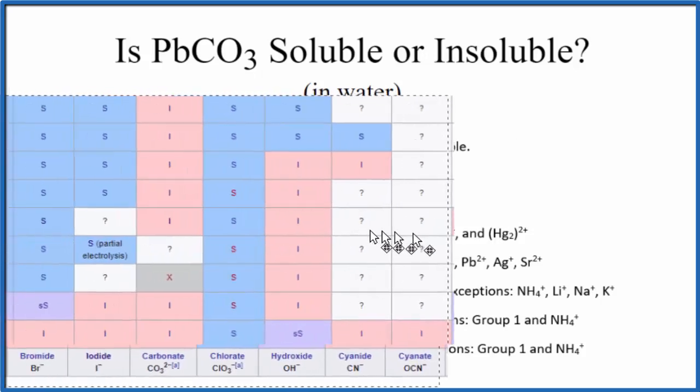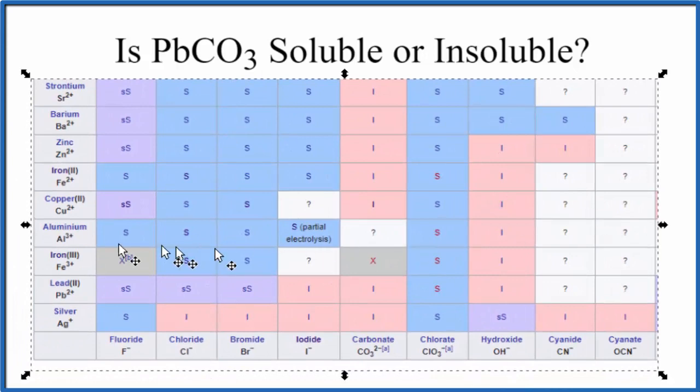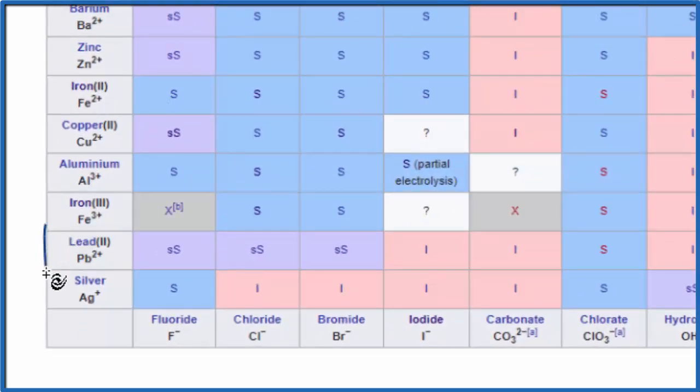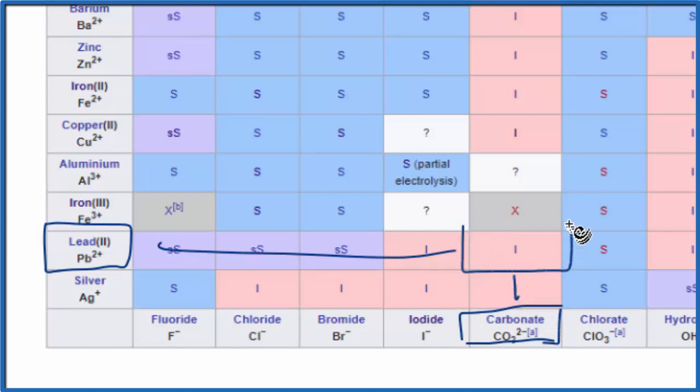We can also look at the solubility chart. Here's just a portion of the solubility chart. The positive ions are on the left and the negative ions (the anions) are on the bottom and on the top as well. We find lead 2, here it is, Pb2+, and then we find the carbonate ion, which is right here, CO3 2-. So we go over and up, and that I there means that PbCO3 will be insoluble in water.